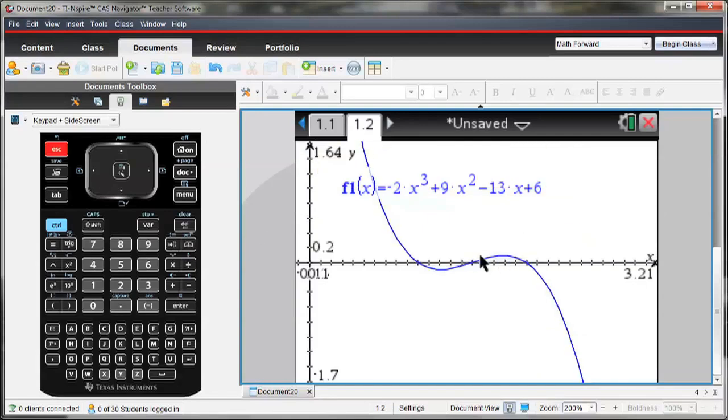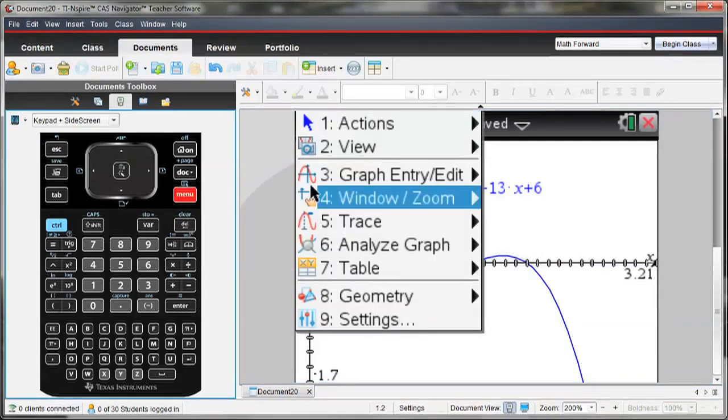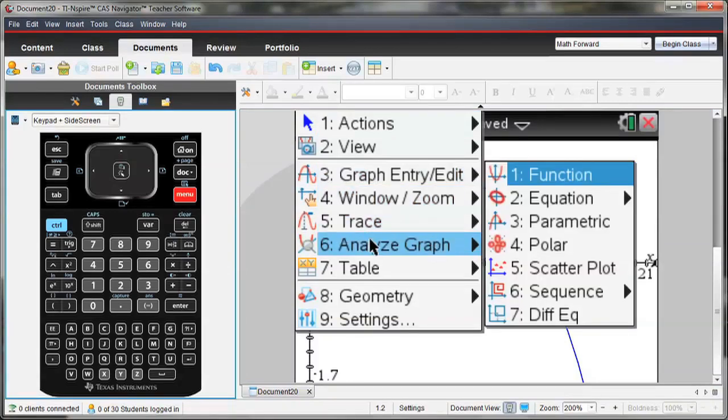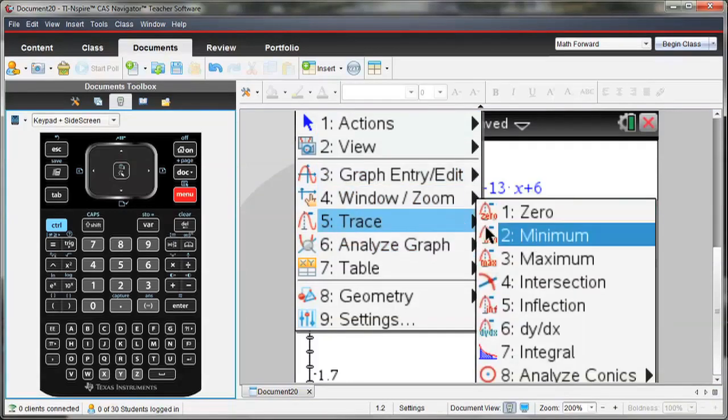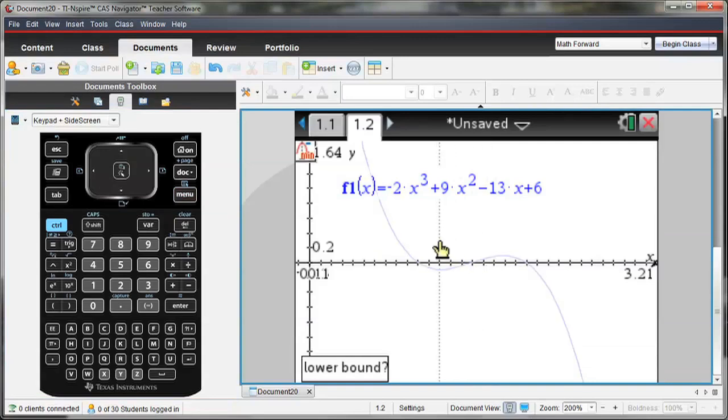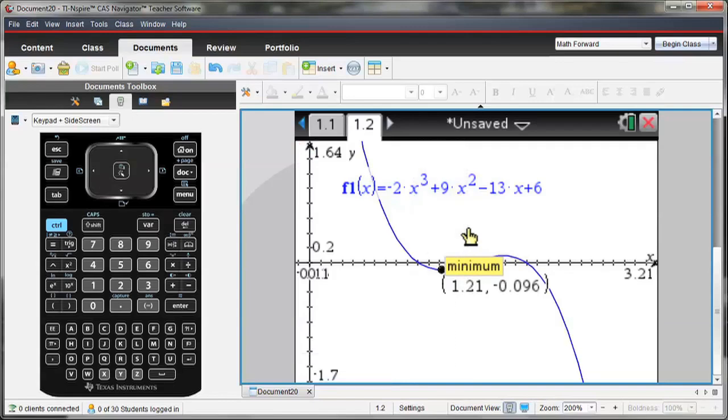Now I notice I have three zeros, a minimum, and a maximum. Let's find what that minimum value is. I go to Menu, Analyze Graph, and then select Minimum. I drag the lower bound to just left of my minimum, then the upper bound to just right of the minimum. You notice that as I did that, the X and Y value for that minimum point showed up on the graph.